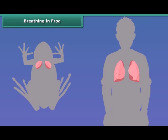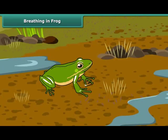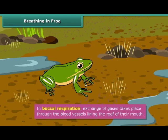Frogs, like human beings, have lungs and use them for breathing. But since their lungs are not well developed, they use two other types of respiration: buccal respiration and cutaneous respiration. In buccal respiration, oxygen is absorbed and the blood vessels that line the roof of their mouth expel carbon dioxide. During this process, the passage to the lungs remains closed.